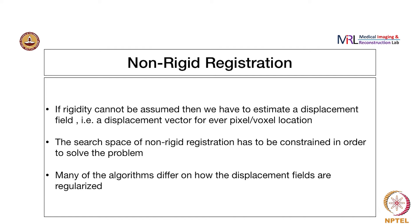The problem with this approach is that, if you consider any grid — even a 2D grid — and you are trying to estimate a displacement vector for every pixel, each pixel can move in almost any direction, so there is no constraint. That means the problem becomes much harder. To limit the search space and make it doable, you typically impose a constraint or a regularization on the deformation field. A lot of algorithms differ on how the displacement fields are regularized and in some cases how they are estimated.